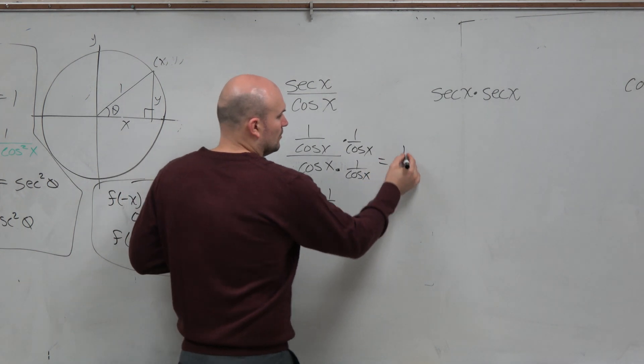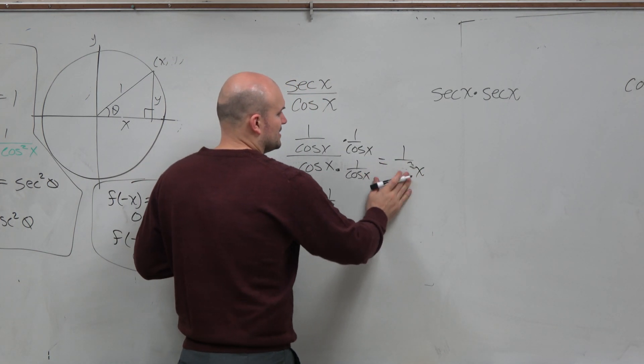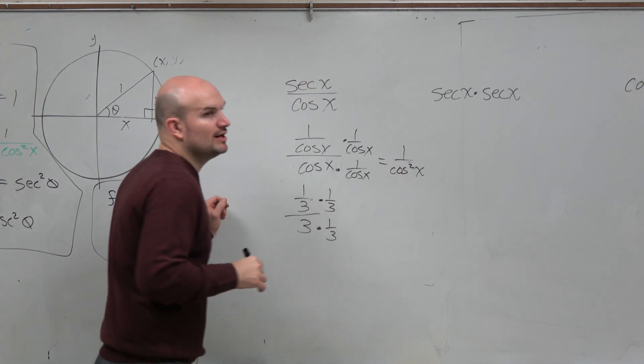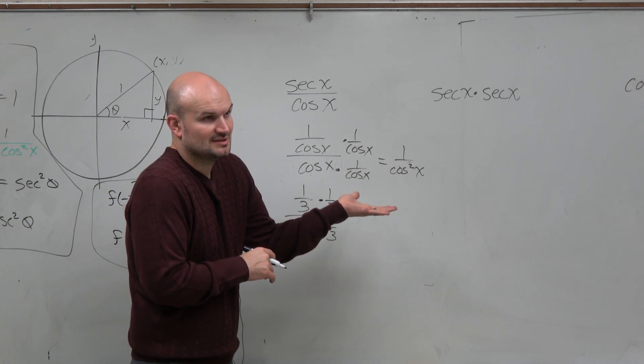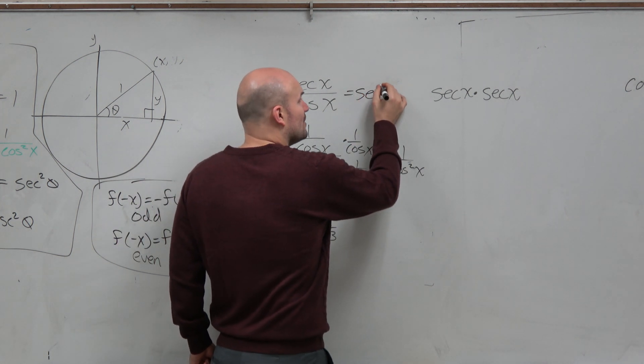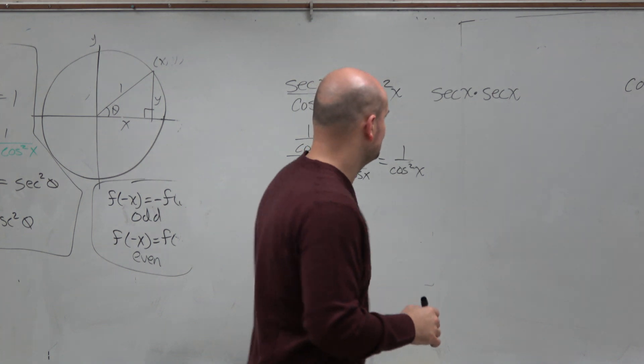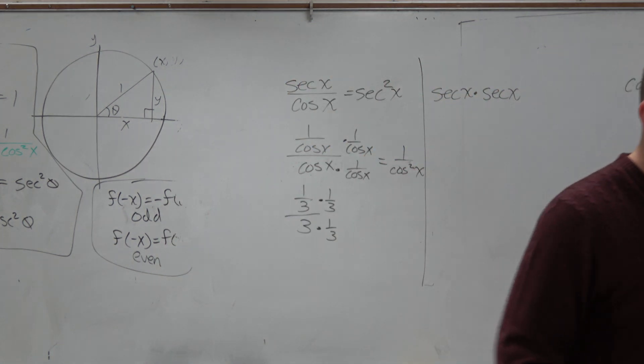We get 1 over secant squared of x. I'm sorry, cosine squared of x, all right? You're welcome. Have a good break. So we get 1 over cosine squared of x, which is really what? Secant squared. Oh, that was right. OK. Oh, it's in the video.